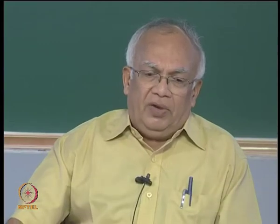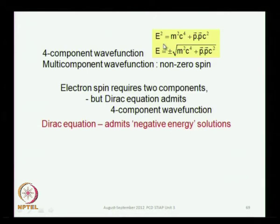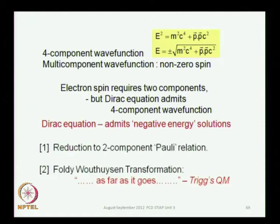I will introduce you to that as well. Now, when you have a multi-component wave function, that is a signature of spin. We really need two components as far as the electron is concerned, but then the Dirac equation, which is set up based on the quadratic scalar of the four-momentum, admits negative energy solutions and allows for antiparticles. The procedure to go over to the two-component Pauli equation is what I will discuss today.